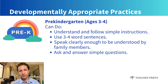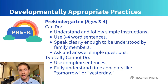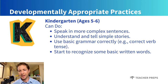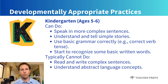Pre-kindergarteners typically struggle with using complex sentences or fully understanding time concepts like yesterday and tomorrow. In kindergarten, ages five to six, students can speak more complex sentences and tell simple stories. They use basic grammar correctly and start to recognize some basic written words. However, kindergarteners struggle with reading and writing more complex sentences and understanding abstract language.